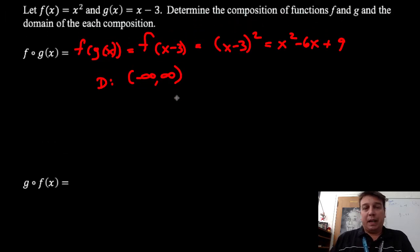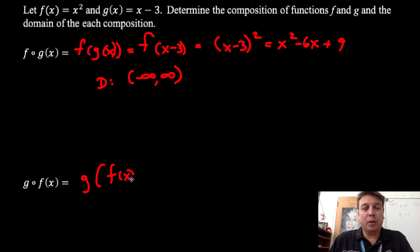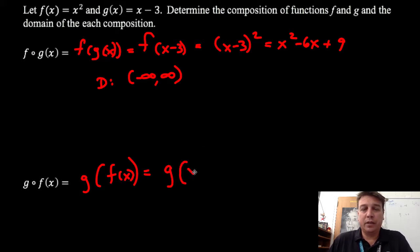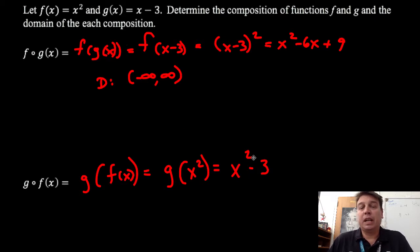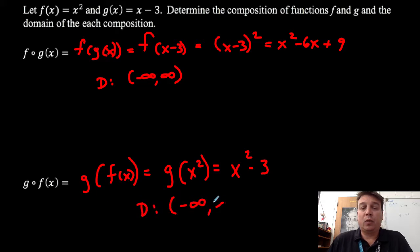Scrolling to the bottom one, this is the same idea. I'm taking whatever f of x is and substituting it into function g. So I have g of f of x, where f of x is x squared, so g of x squared. I substitute x squared everywhere there's an x, giving me x squared minus 3. Since the domain of f is all real numbers and the domain of g is all real numbers, I have no restrictions, so my domain here is also all real numbers.